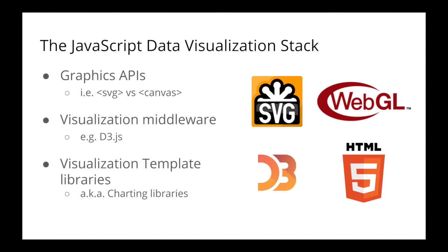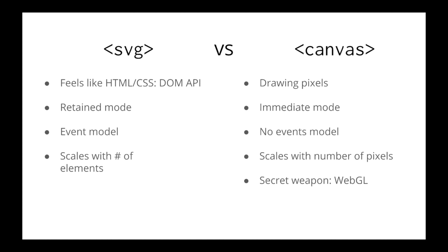Let's dive right in. In terms of graphics APIs, modern browsers provide you essentially two major ways of doing things. You've got SVG — Scalable Vector Graphics — which is an XML specification for vector graphics. And you've got Canvas, better known as the canvas tag in HTML5. Many pixels have been spilled about the various merits and demerits of each, so I'll summarize the comparison here. Working with SVG is a lot like working with HTML or CSS.